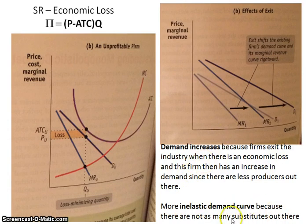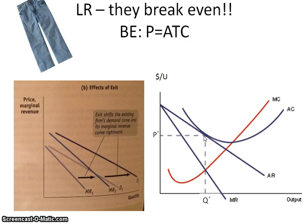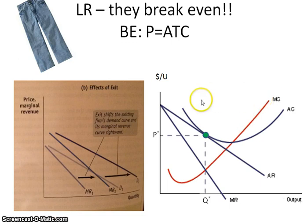When you talk about substitutability, you find that the demand curve becomes more inelastic as firms exit the industry. In the end, as firms exit and the demand curve shifts right due to the economic loss, the demand curve moves to the point where it becomes tangent at MR equals MC with the average total cost curve. And again, we will have a firm that breaks even in the long run. The only reason the monopolistically competitive firm can break even — just like the perfectly competitive firm — is because of that ease of entry and exit of firms in the long run.